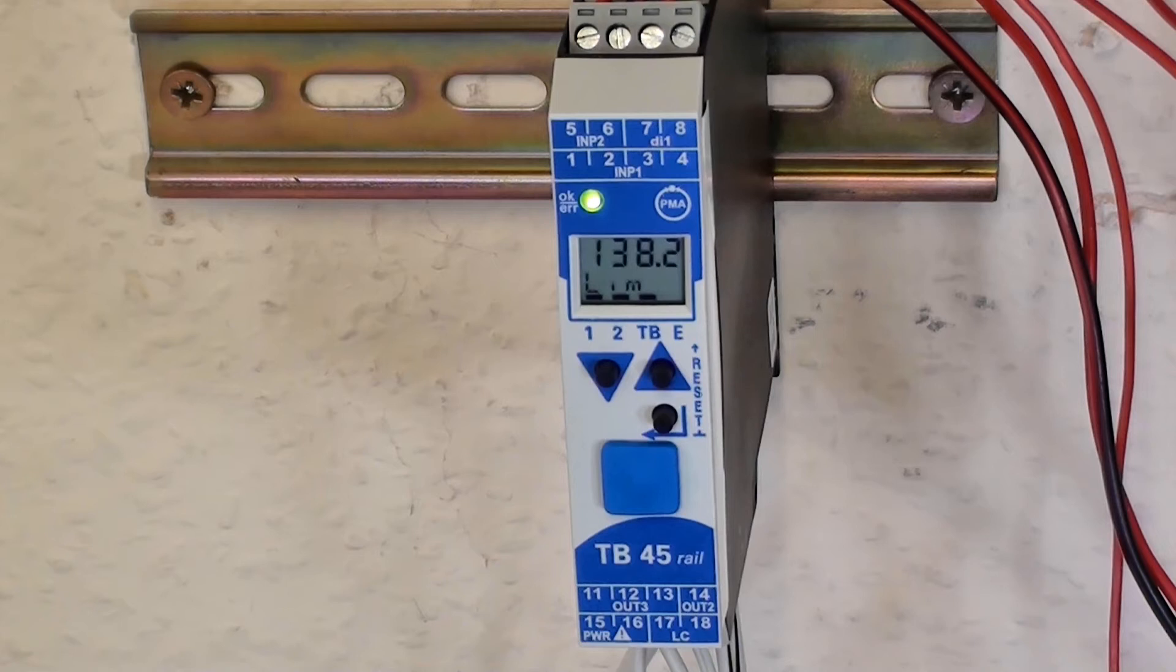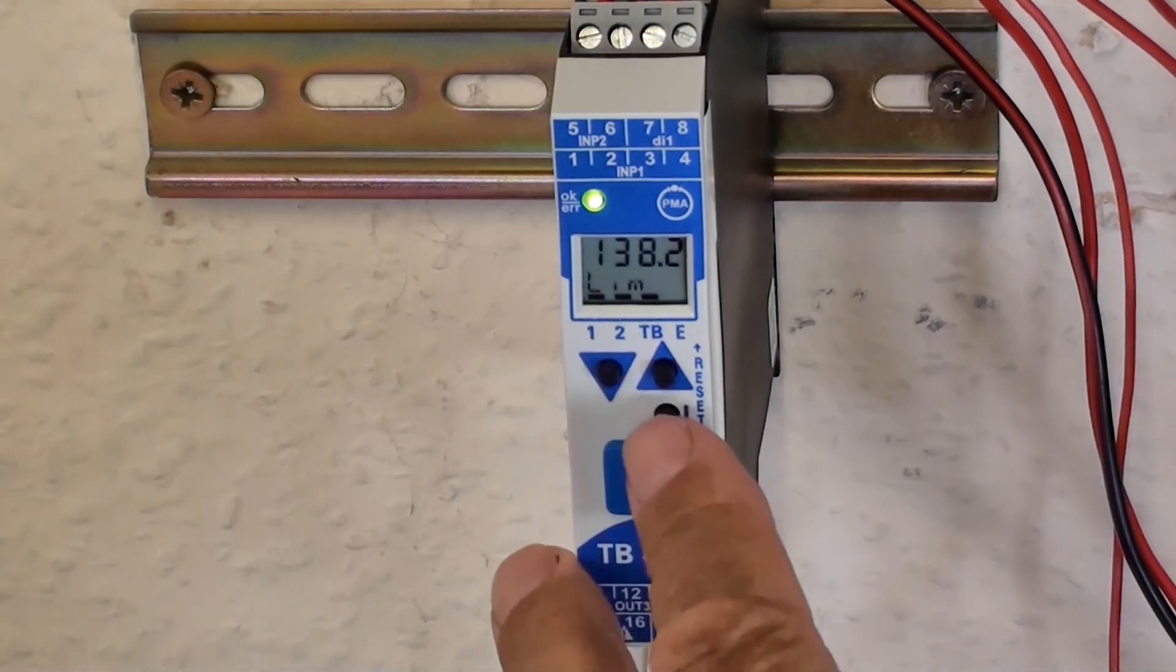This is where we can select the type of inputs we want and the functions of the output relays. The first function is the limit alarm itself.